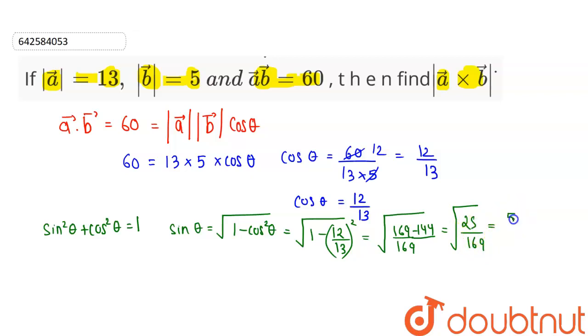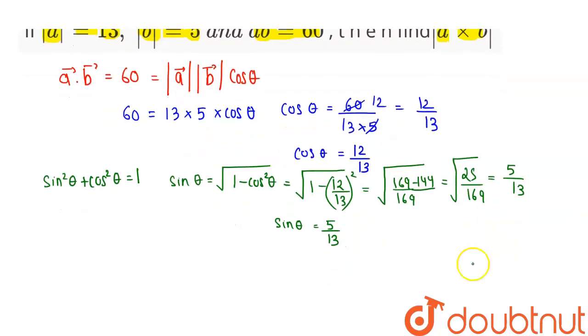So under root of this will be 5 by 13. So sin theta is 5 by 13. Now, mod of A vector cross B vector is given by the formula that is mod of A vector mod of B vector into sin theta.